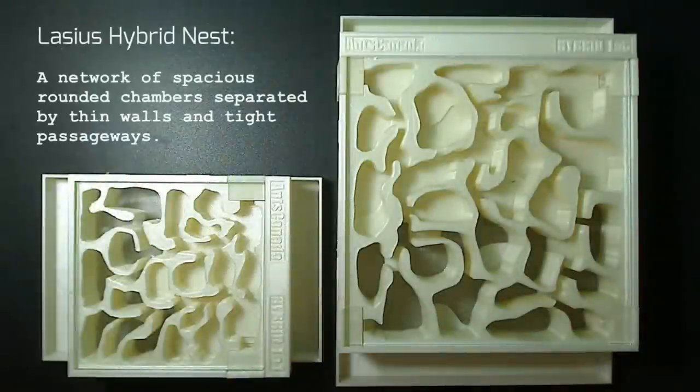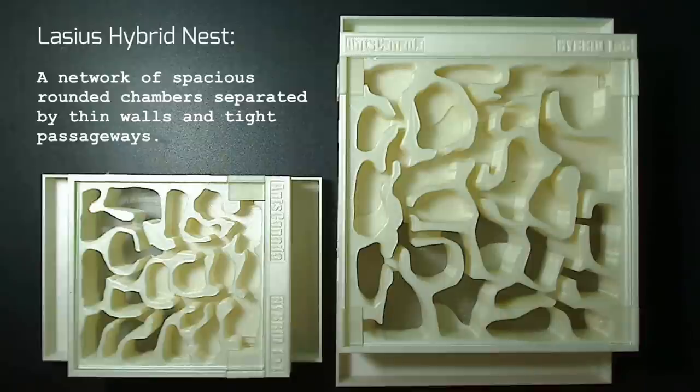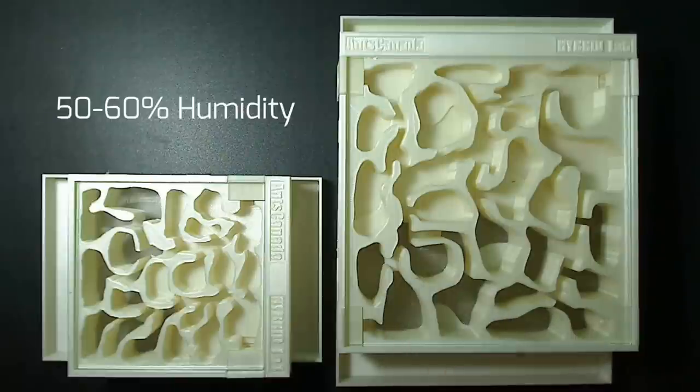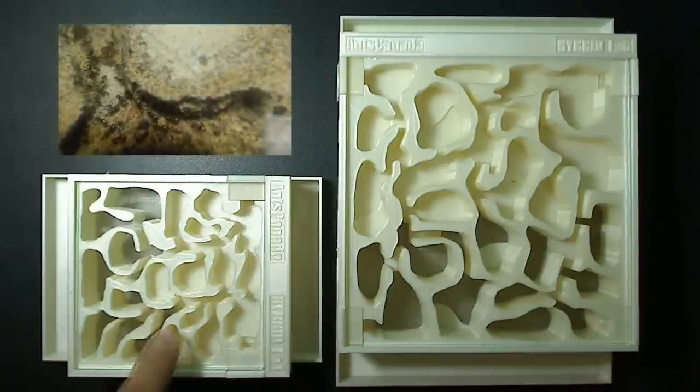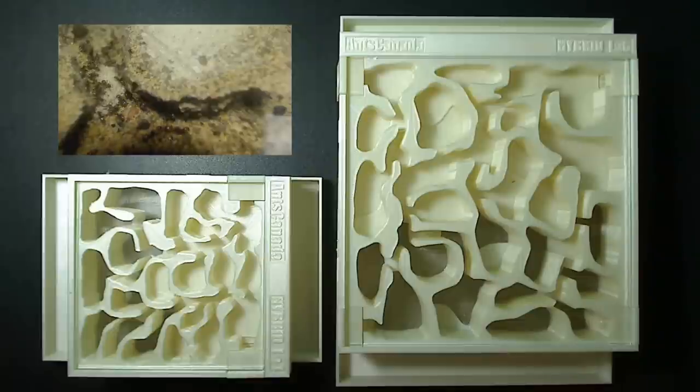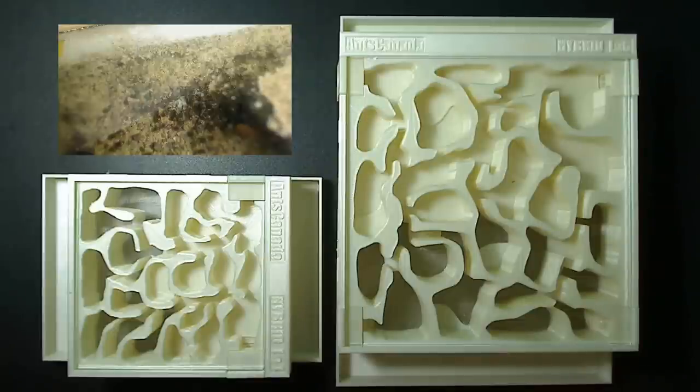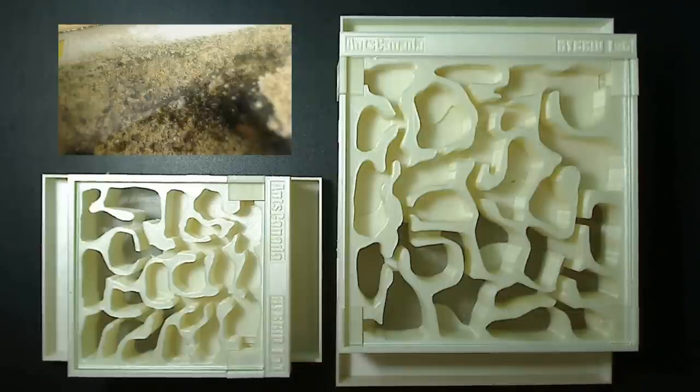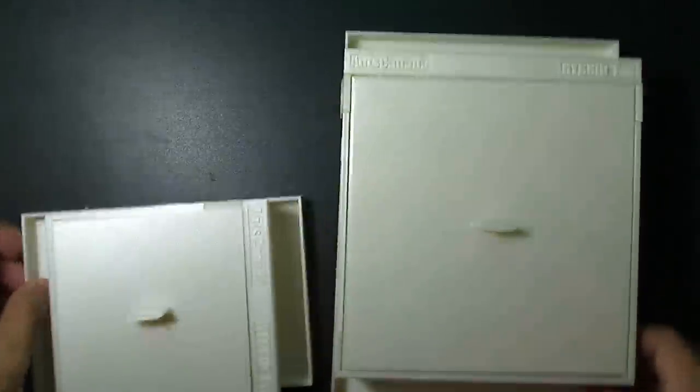The Lasius hybrid nest. A network of spacious rounded chambers separated by thin walls and tight passageways. This formicarium offers 50-60% humidity. This hybrid nest is designed to house Lasius ants, as well as other common small ant species, like Tetramorium, Solenopsis, Crematogaster, and Temnothorax. It may not be suitable for Camponotus, Pogonomyrmex, Messor, Formica, or any other species whose queen or workers exceeds 4mm in length or girth.